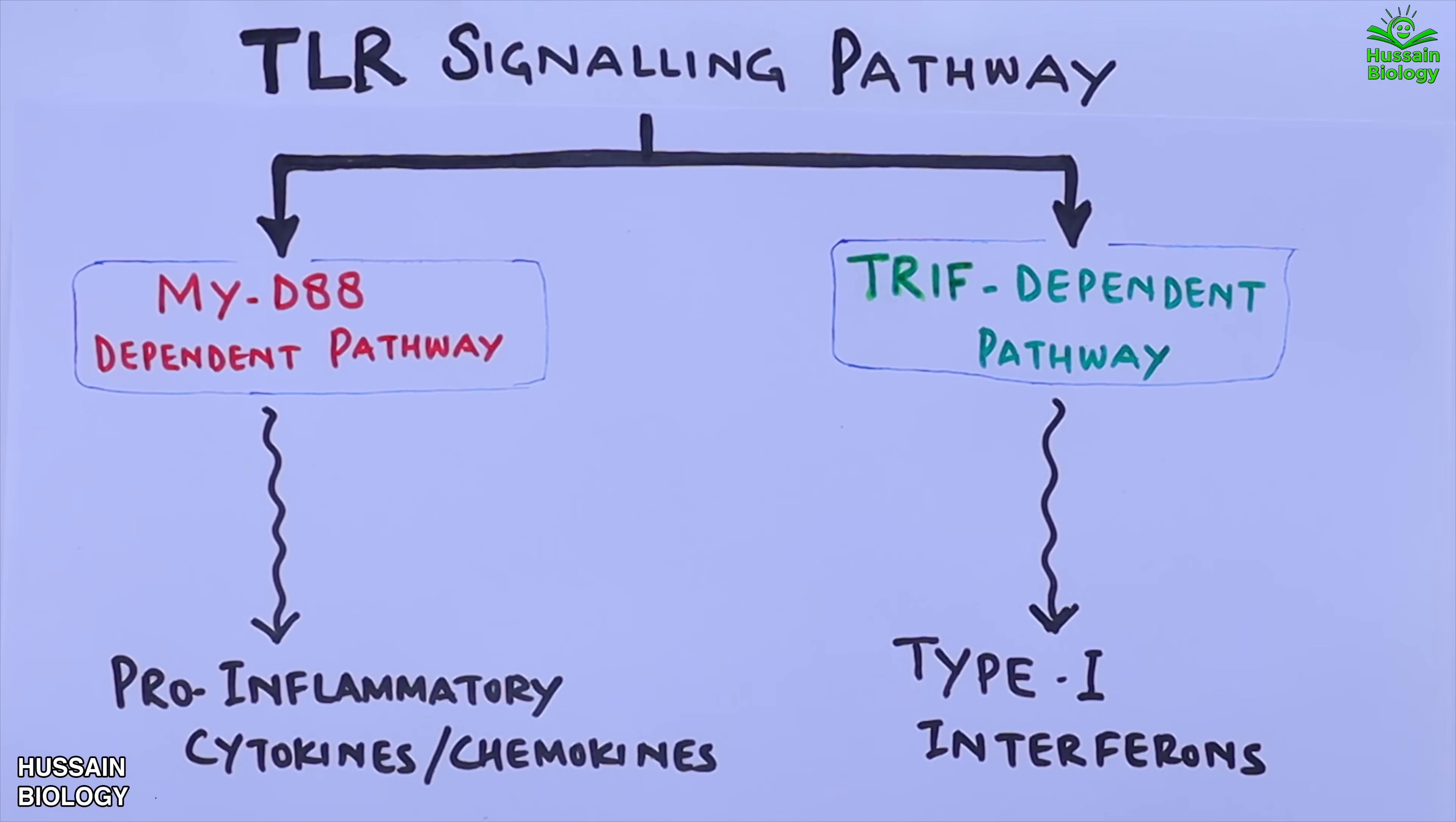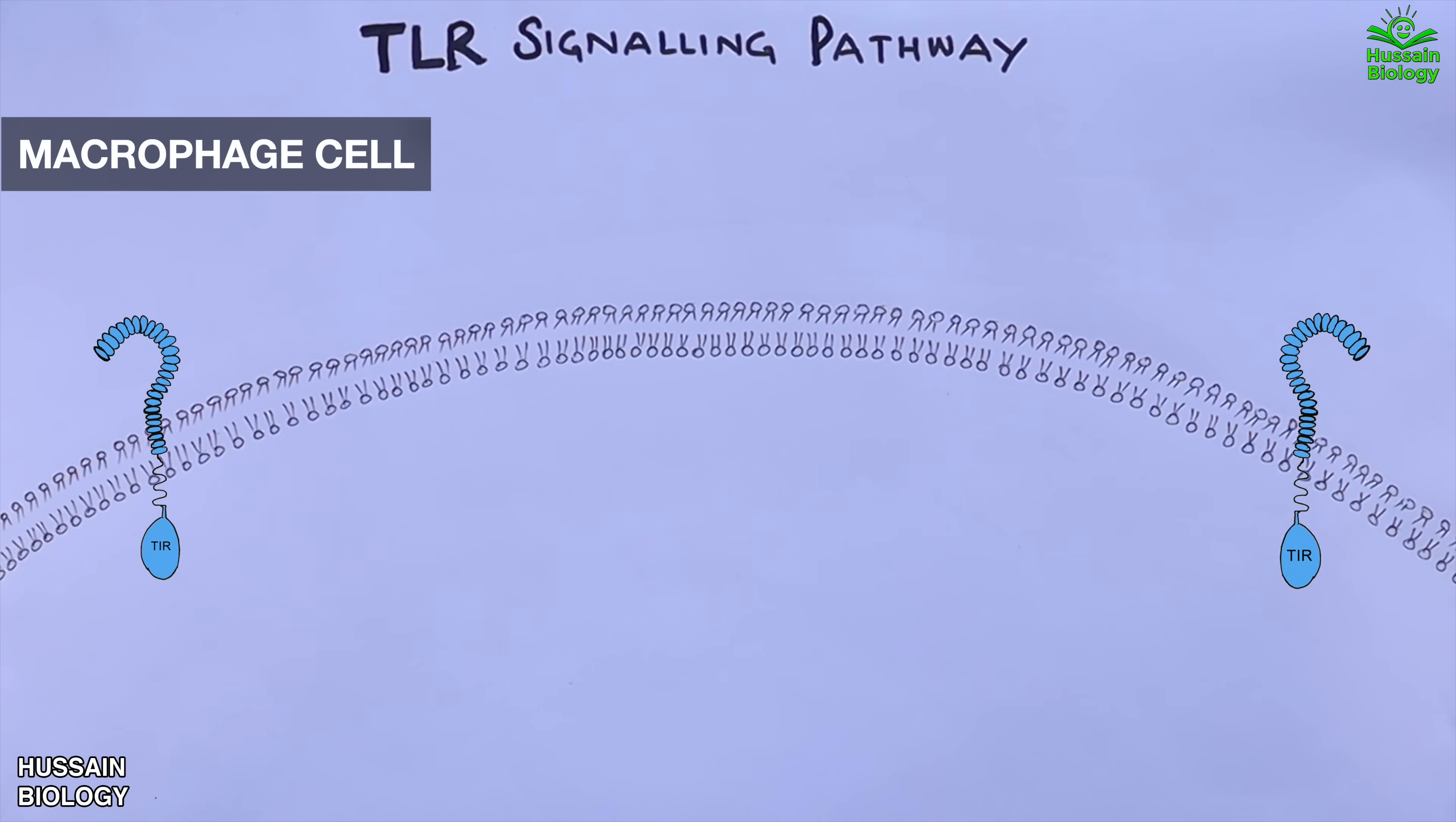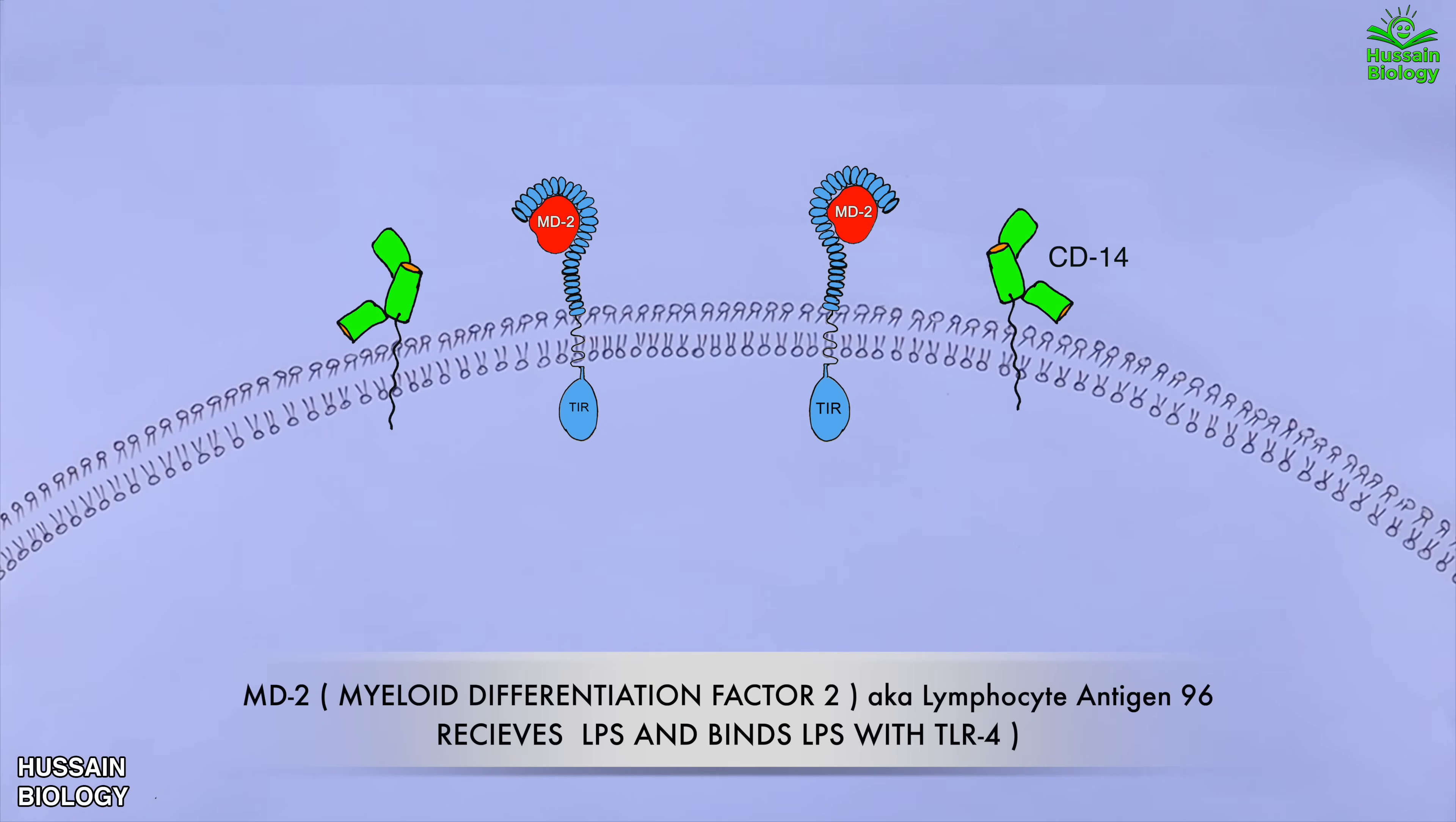Now lets see the pathway in detail. Here in this diagram we have the cell membrane. It has got two monomers of TLR4 as shown in the diagram. And these two monomers of TLR are associated with MD2 molecules. We also have CD14 molecule on the cell membrane as shown in the diagram.